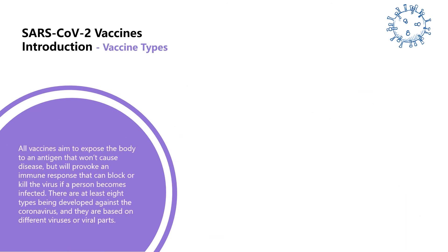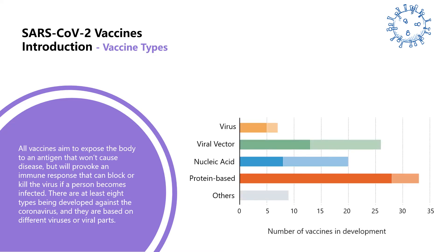The body's adaptive immune system can learn to recognize new invading pathogens. The existing SARS-CoV-2 vaccine research and development is carried out on the basis of strengthening immunity. The purpose of all vaccines is to expose the human body to antigens that do not cause disease, but are able to stimulate an immune response. Then if a person is infected, the immune response can stop or kill the virus. There are at least eight approaches against coronaviruses, based on different viruses or parts of the virus.